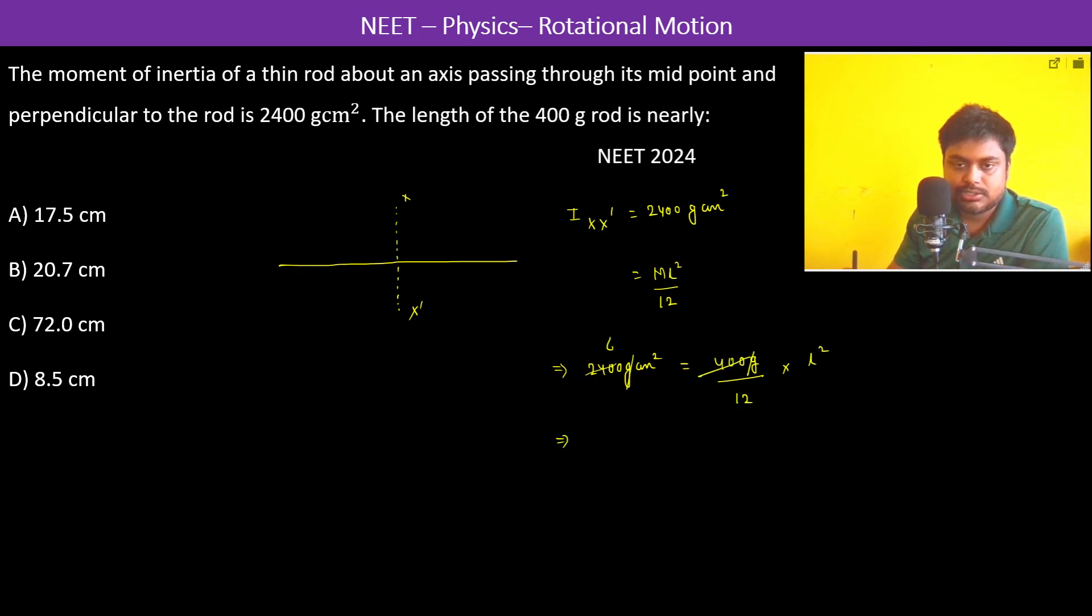So this is 6, okay. So l square is equal to 72 centimeter whole square. Therefore l will be 6 root 2 centimeter.